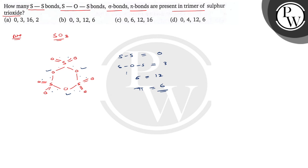So total number of S-S bonds are 0, S-O-S bonds are 3, sigma bonds are 12, and pi bonds are 6. So this is the answer and the correct option is B. I hope you understood well. Best of luck.